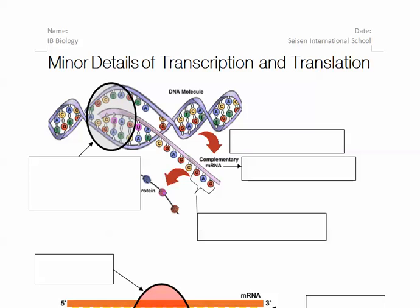In the previous videos, we talked about the overall central dogma of biology, and it involves DNA being transcribed into RNA, and then that RNA being translated into a sequence of amino acids, which will fold into a protein and have a specific function.